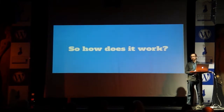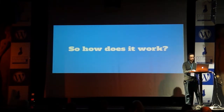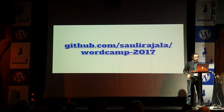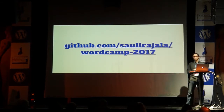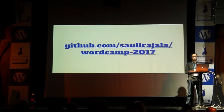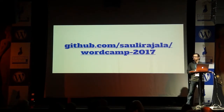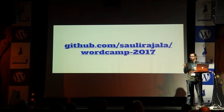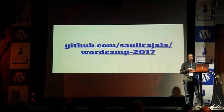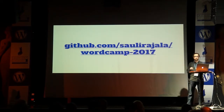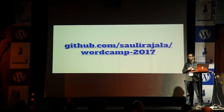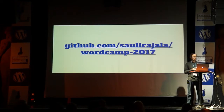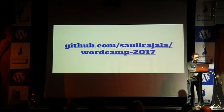So how does Wraith work in practice? Wraith uses a config file where you can set all the necessary settings. You can find an example config file on the Wraith GitHub repository, and also on my personal GitHub repository, where you can find the config file I'm using in this demonstration.